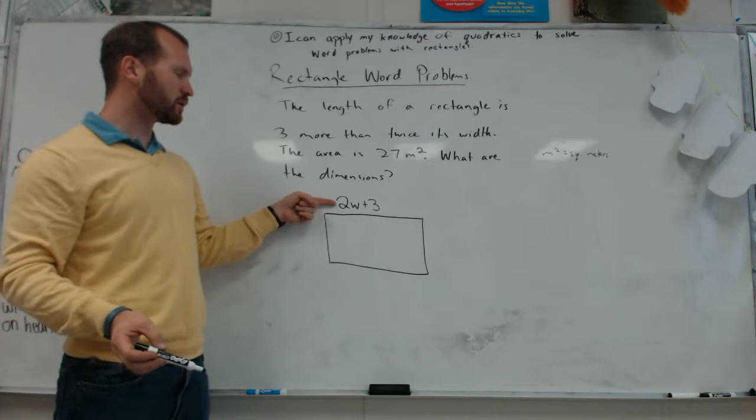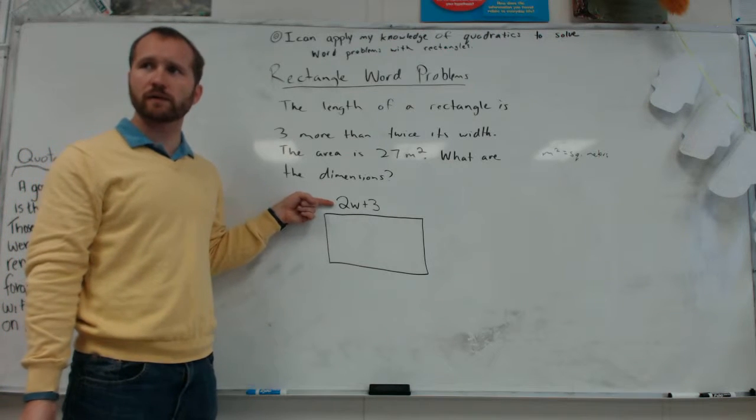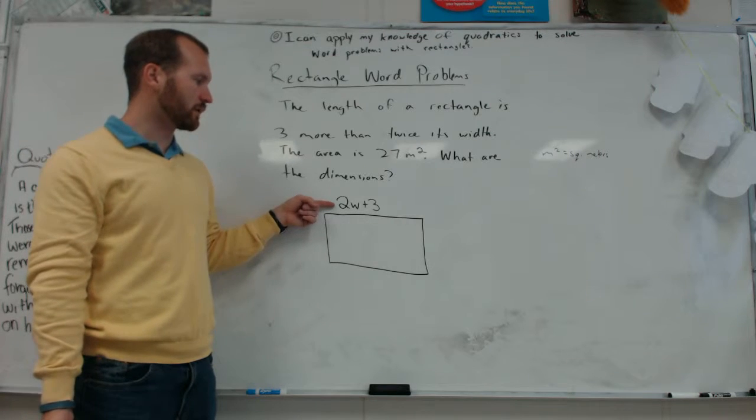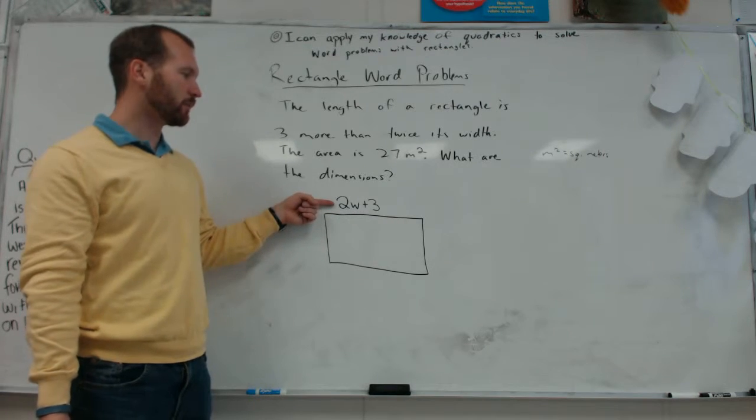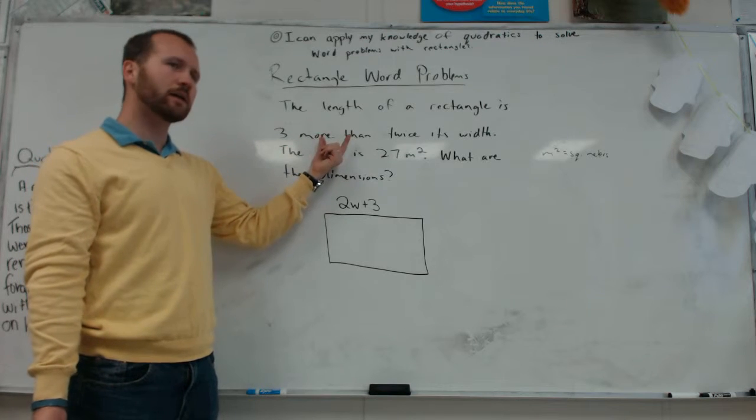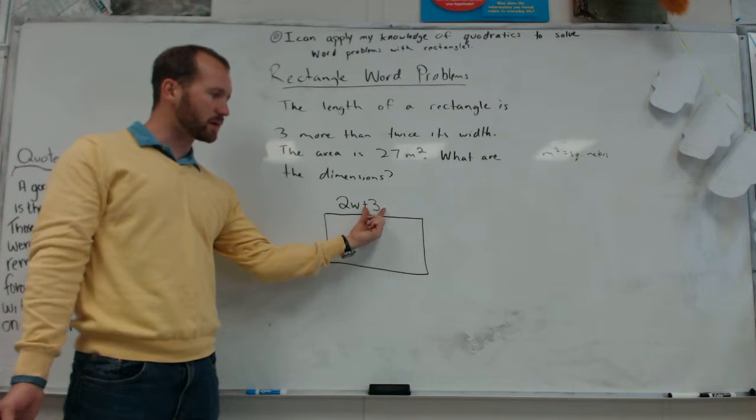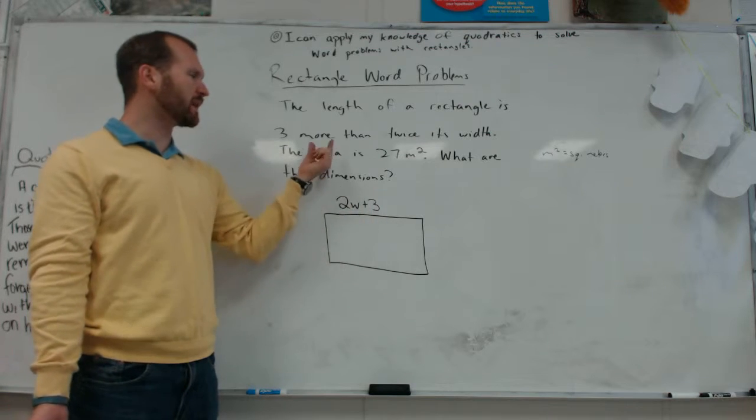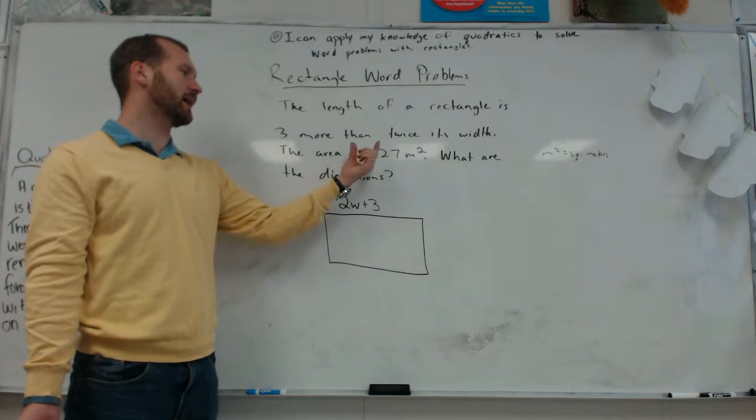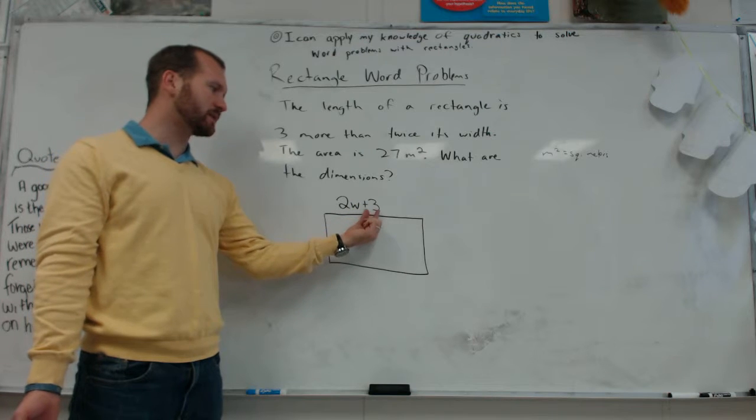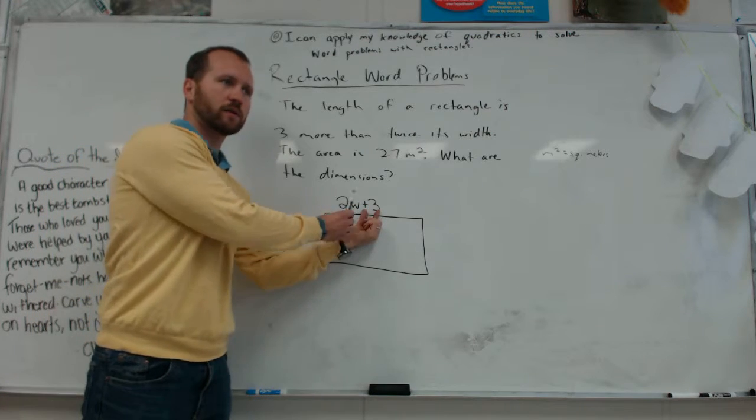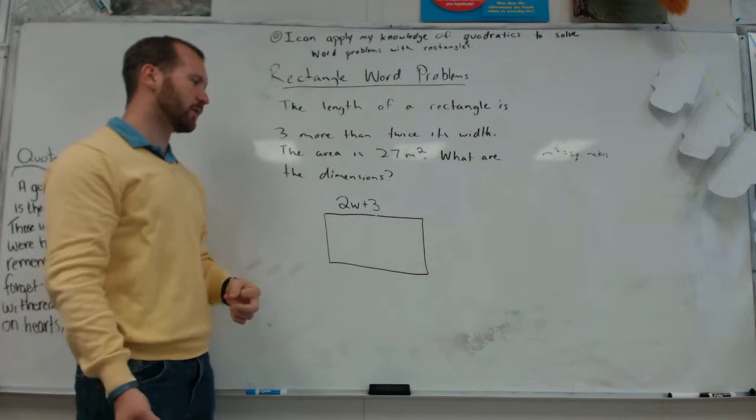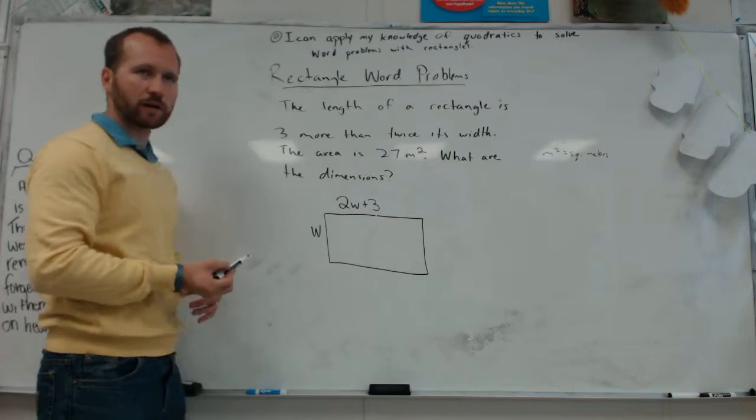So the length is 3 more than twice the width. You guys have done problems sort of like this, but probably not in a while. When we see 3 more than, we talked about writing that over to the right-hand side. Same thing with less than. If it said like 5 less than, you would write minus 5 off to the right-hand side. And then twice the width is 2w. And so then the other side is just w. That's the width.